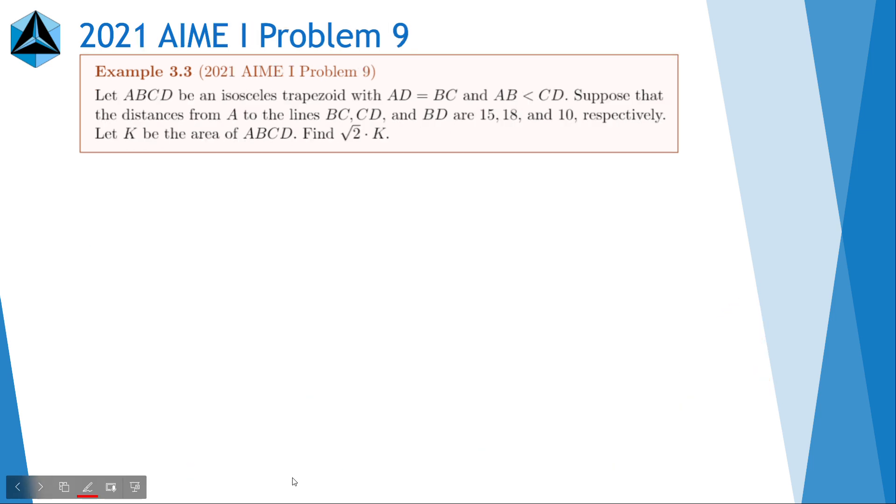Okay. And now for the last example, this is a problem that some of you may be slightly familiar with, from the 2021 AIME 1. So in this problem, we're given an isosceles trapezoid and some distances from A to the lines BC, CD, and BD. So for this problem, the distances motivate us to set some kind of nice point as the origin and then use the point to line formula to calculate some stuff by getting some equations.